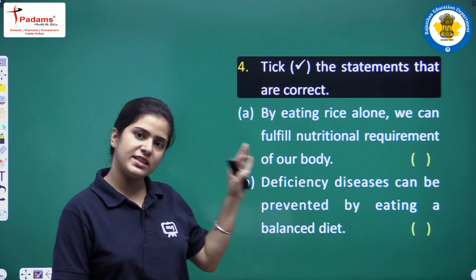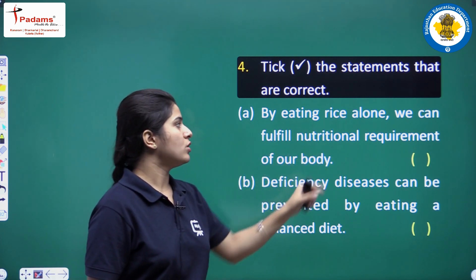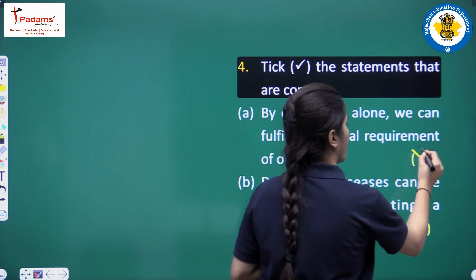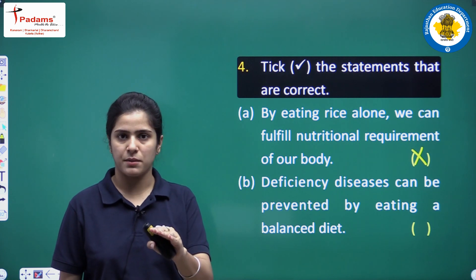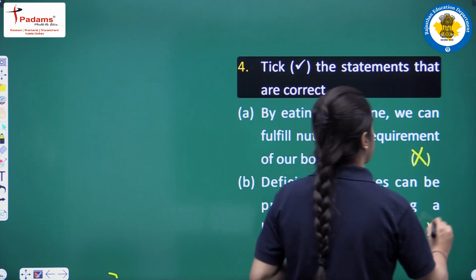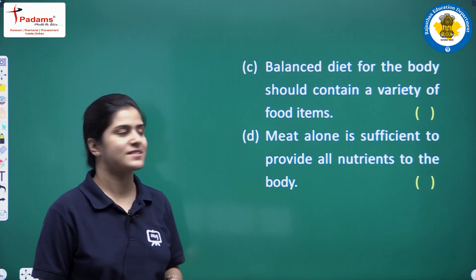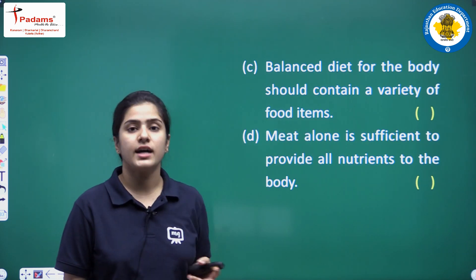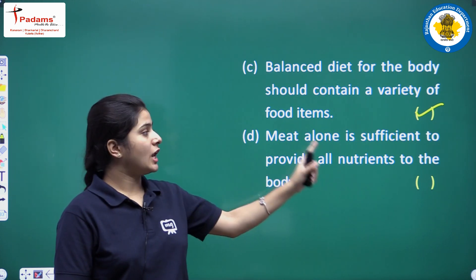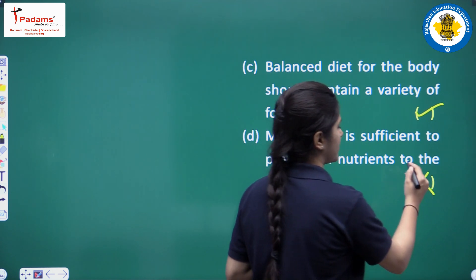Tick the correct statements. First: by eating rice alone, we can fulfill the nutritional requirements of our body — this is incorrect, rice alone is not enough. Second: deficiency diseases can be prevented by eating a balanced diet — correct. Third: a balanced diet should contain a variety of food items — correct. Fourth: meat alone is sufficient to provide all nutrients to the body — this is wrong, meat alone is not sufficient.